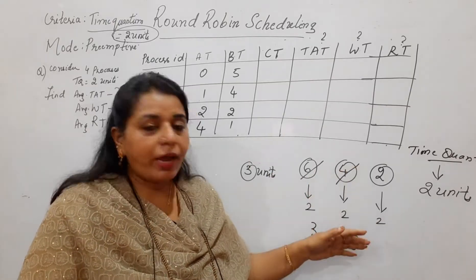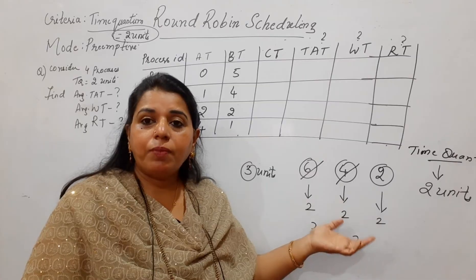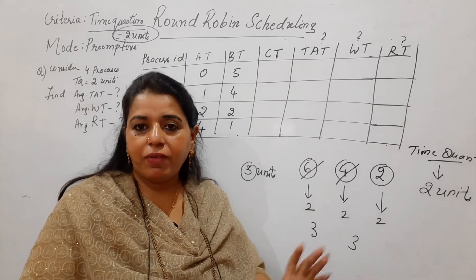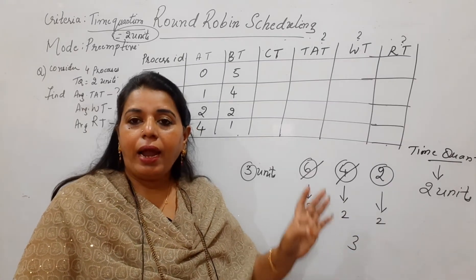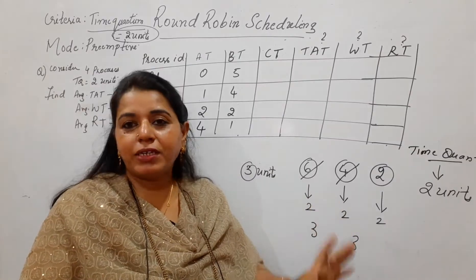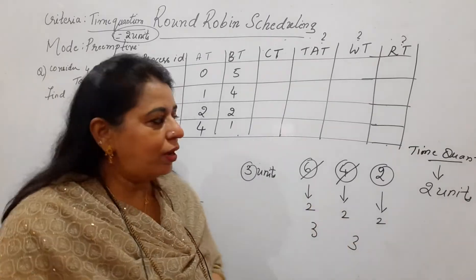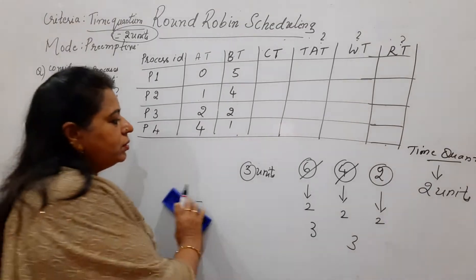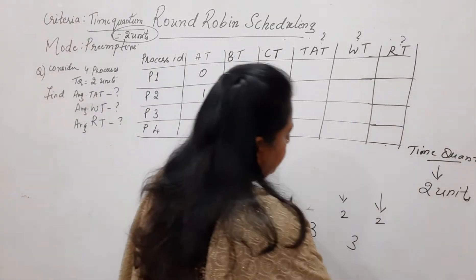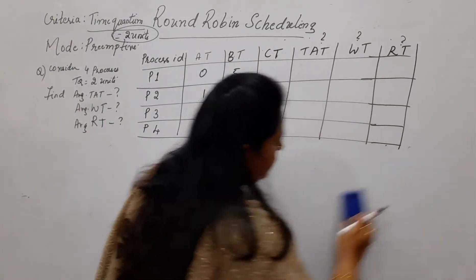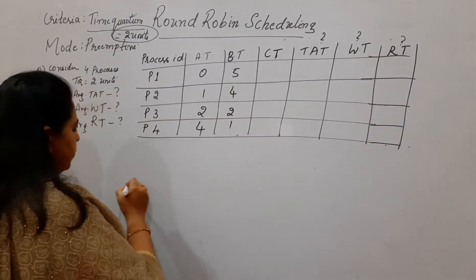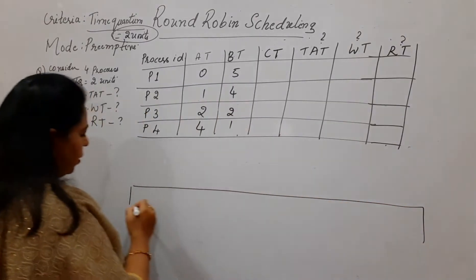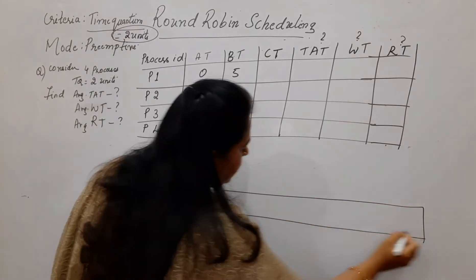If the burst time value is lesser than the time quantum, there is no problem — the process will get scheduled and complete its job in the first stage itself. Now let us see the numerical. Always start by solving the completion time using the running queue.